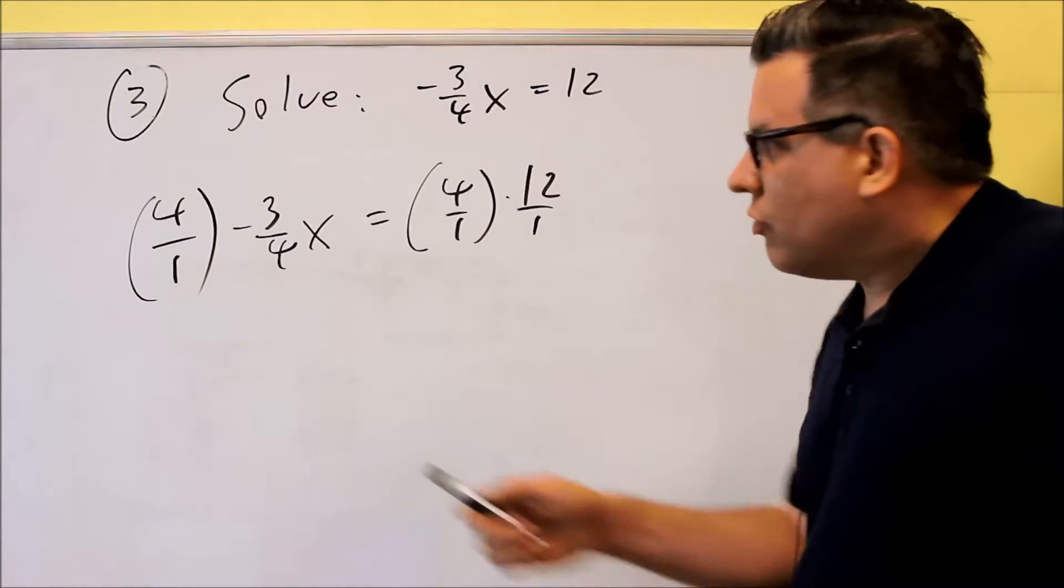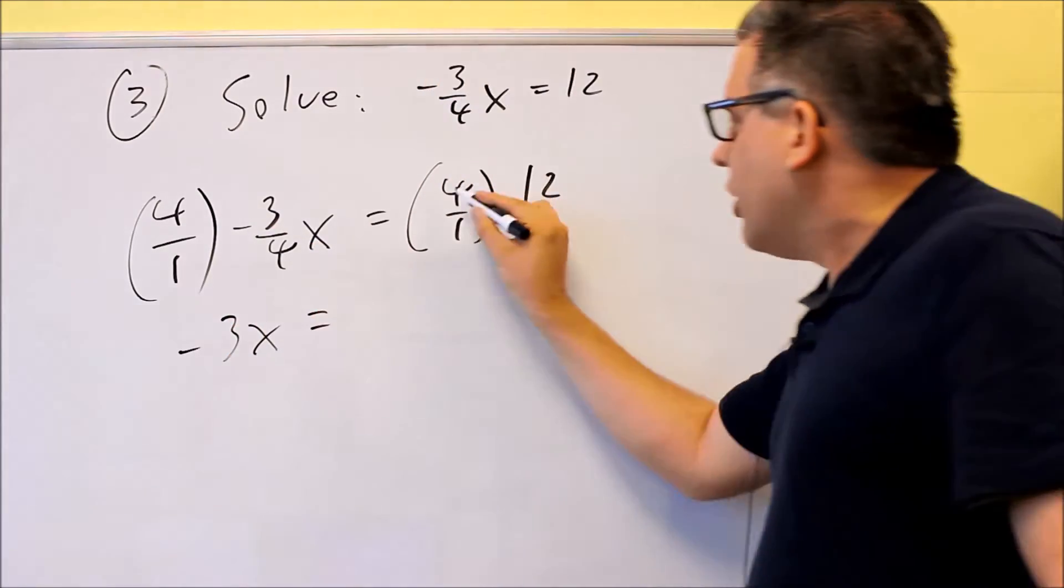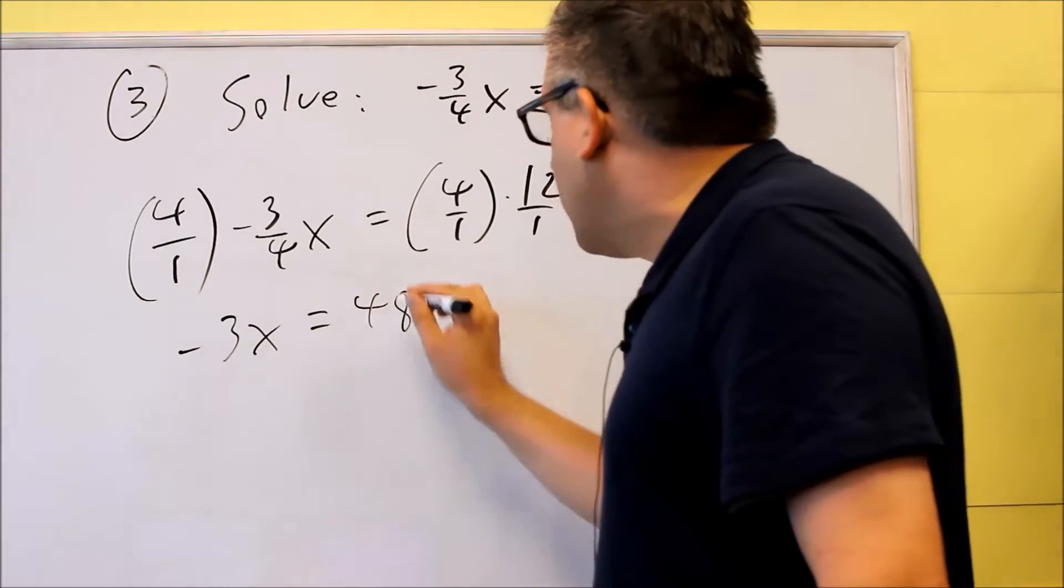Now I'm going to go ahead and multiply through. The 4s are going to cancel out, and I get negative 3X. Over here, 4 times 12 is going to be 48.